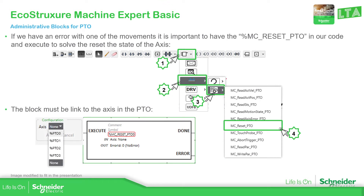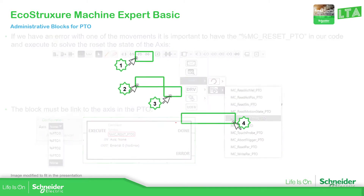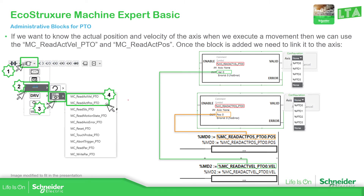To use the reset, just go to the function blocks for PTO administrative, then select this one, drag and drop it, or just click on the function block and click where you want to locate it. It's important when you locate the function block: you need to link the axis to something that you have configured in the previous part — otherwise it's not going to work. The same applies with readActualPosition and readVelocity — we need to link the axis to something.